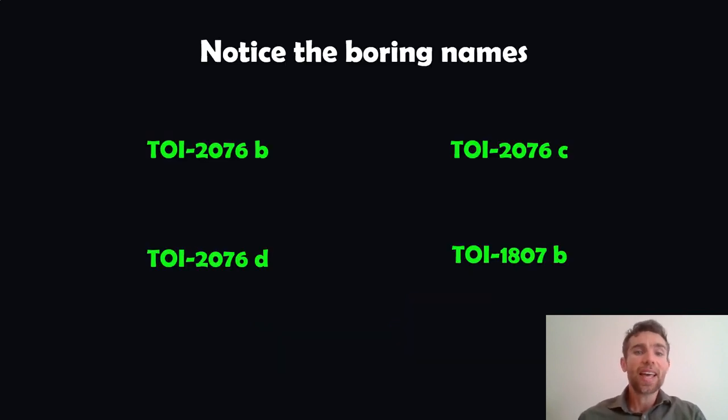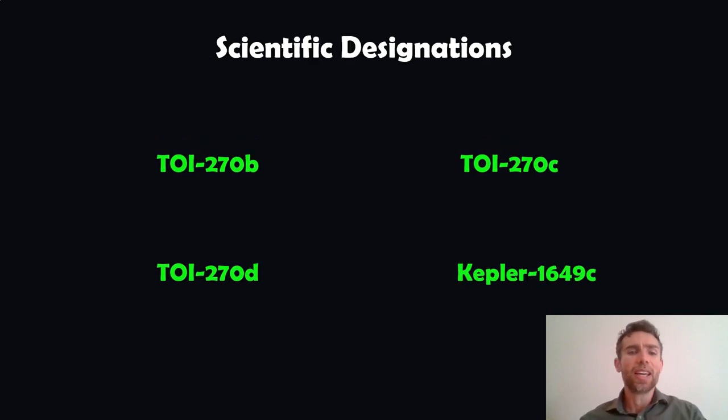Let's have a look at the names of those planets. They're pretty boring: TOI 276b, same again C, D and then TOI 1807b. You can probably start to see where that name's come from but they're really boring names, not something exciting like someone's name. We're going to go through the scientific designation for a planet and explain how they actually get their name.